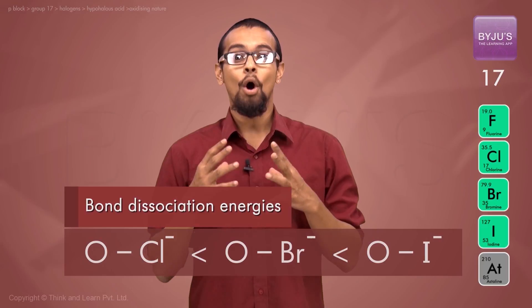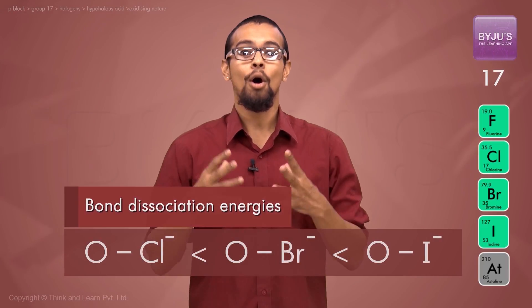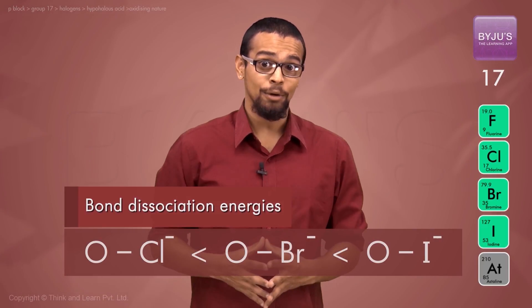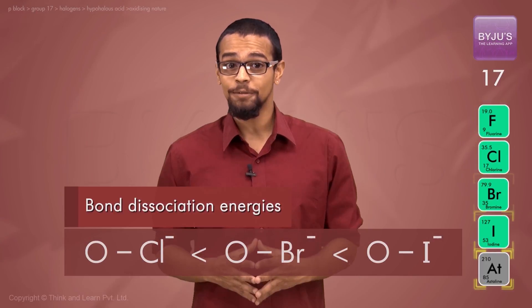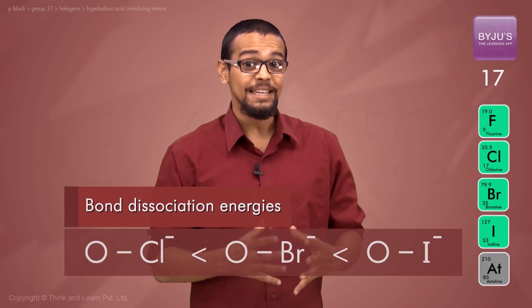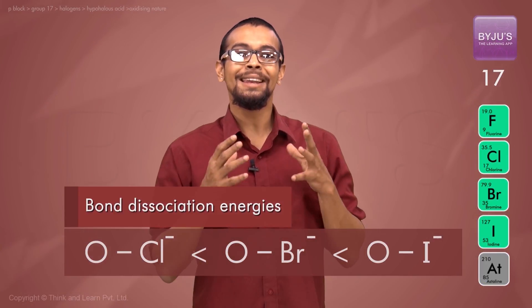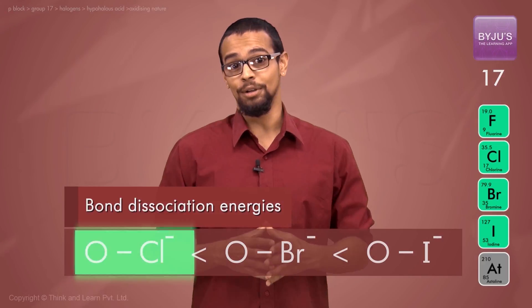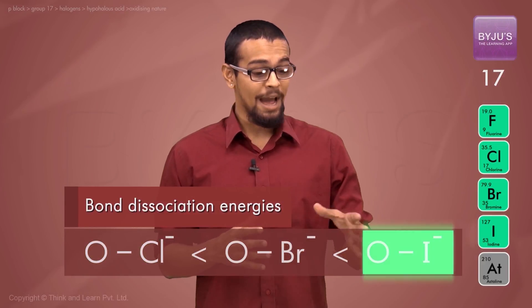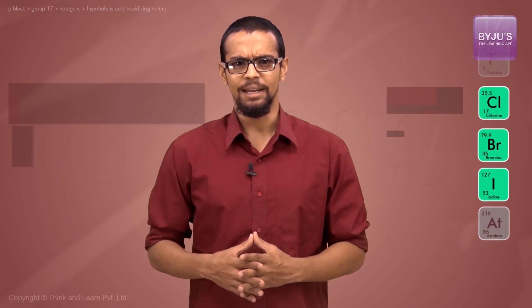The oxidizing nature of the hypohalite ions as you go down the group of the halogen family decreases, because it's easier to cleave away the Cl-O bond than it is to cleave away the I-O bond.